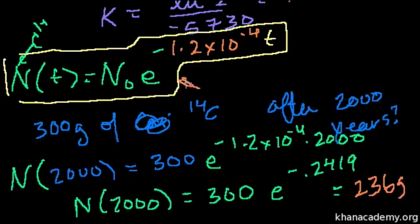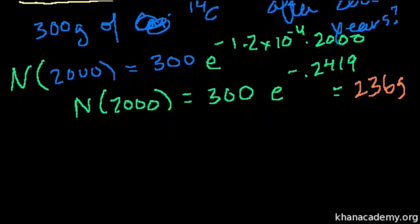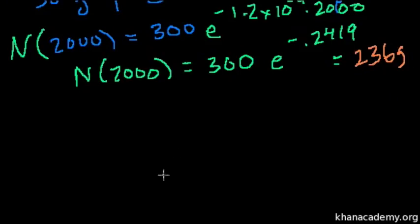So just like that, using this exponential decay formula, I was able to figure out how much of the carbon I have after kind of an unusual period of time. A non-half-life period of time. Let's do another one like this. Let's go the other way around. Let's say I'm trying to figure out. Let's say I start off with 400 grams of C-14.